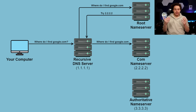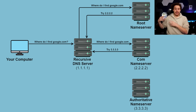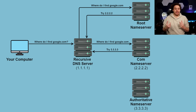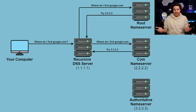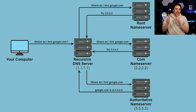Then my ISP's DNS server is going to ask that server 'hey, where can I find google.com?' Again that server doesn't know the answer but it does know where the authoritative name server for google.com is — which is the server they have configured to respond to DNS requests. This could be a hosted DNS provider or their own DNS server, but whatever it is, that is the authoritative server which has the authority to tell someone where google.com actually is. So it responds with an IP address, which is relayed back to my computer.